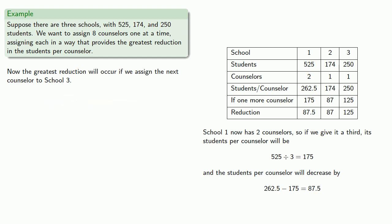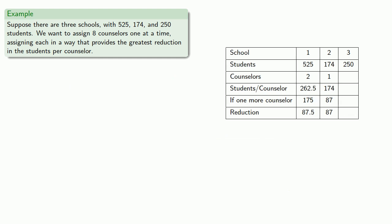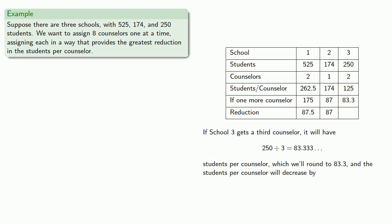We only changed the number of counselors at School 3, so Schools 1 and 2 values stay the same, but we do need to recompute the third column. School 3 now has two counselors with a different students-per-counselor ratio, and if we give it a third counselor, it will have 83.3 students per counselor, and the students per counselor will decrease by 41.7.